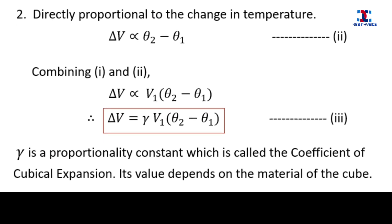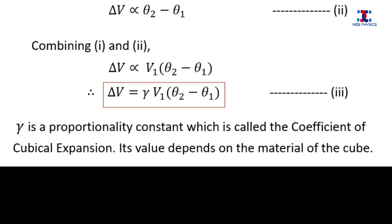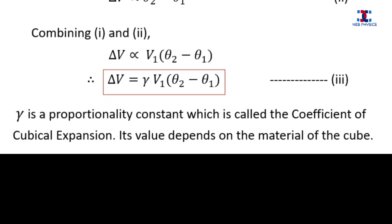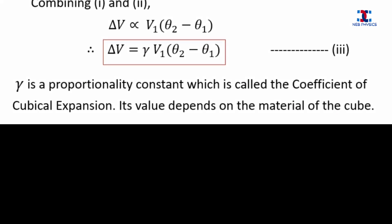In equation 3, Gamma is a proportionality constant which is called the coefficient of cubical expansion. The value of Gamma depends upon the material of the cube.